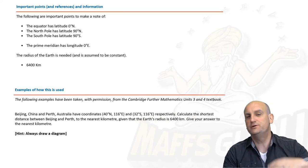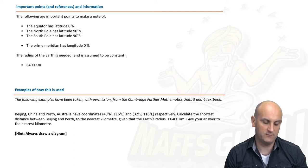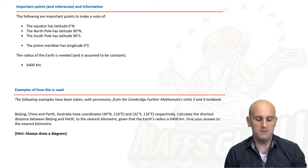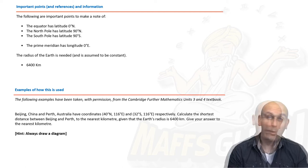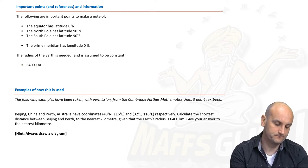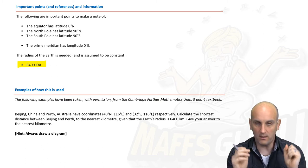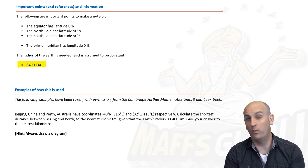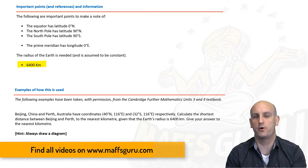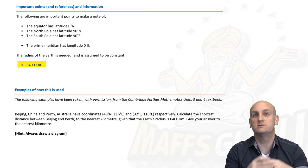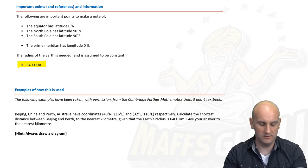Important reference points: the equator has a latitude of zero degrees north, the north pole is 90 degrees north, and the south pole is 90 degrees south. The prime meridian has longitude 0 degrees east. One thing that is vitally important you must know is that the radius of the Earth is 6,400 kilometres. This is going to come up in questions because, just like in the arc length video, we need to know the radius of the circle we're dealing with — and now we also need our subtended angle.